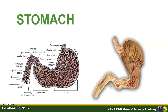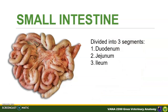The parietal surface of the stomach lies against the diaphragm and liver, while the visceral surface is in contact with adjacent abdominal organs. The small intestine extends from the pylorus of the stomach to the ileocolic orifice leading into the large intestine. It is the longest portion of the alimentary canal, having an average length in the living animal of 3.5 times the length of the body. It is divided into duodenum, jejunum, and ileum.